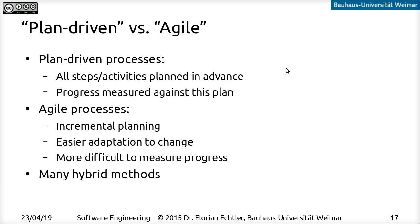I'd like to talk about a very fundamental distinction between two different types of software processes. On the one hand we have plan-driven processes, and on the other hand agile processes. For plan-driven ones, we have a plan made in advance at the beginning of the project. All the activities and each individual step are ideally determined in advance, and progress can be measured against that plan.